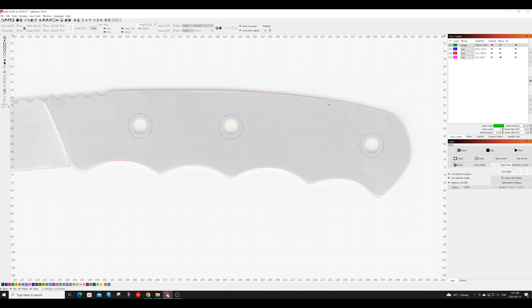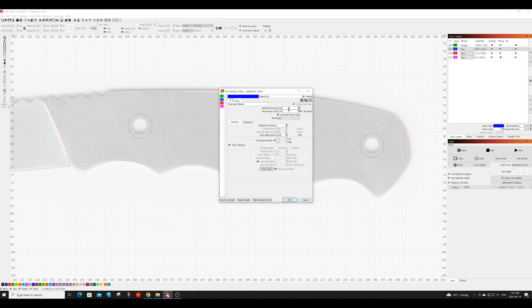I am now going to go ahead and do a test cut of this to see how well it fits onto the handle. For my settings, I'll be engraving this blue ring around my screw holes at a speed of 20 and a power of 25. Everything else I will be cutting out at a speed of 7 and a power of 100.